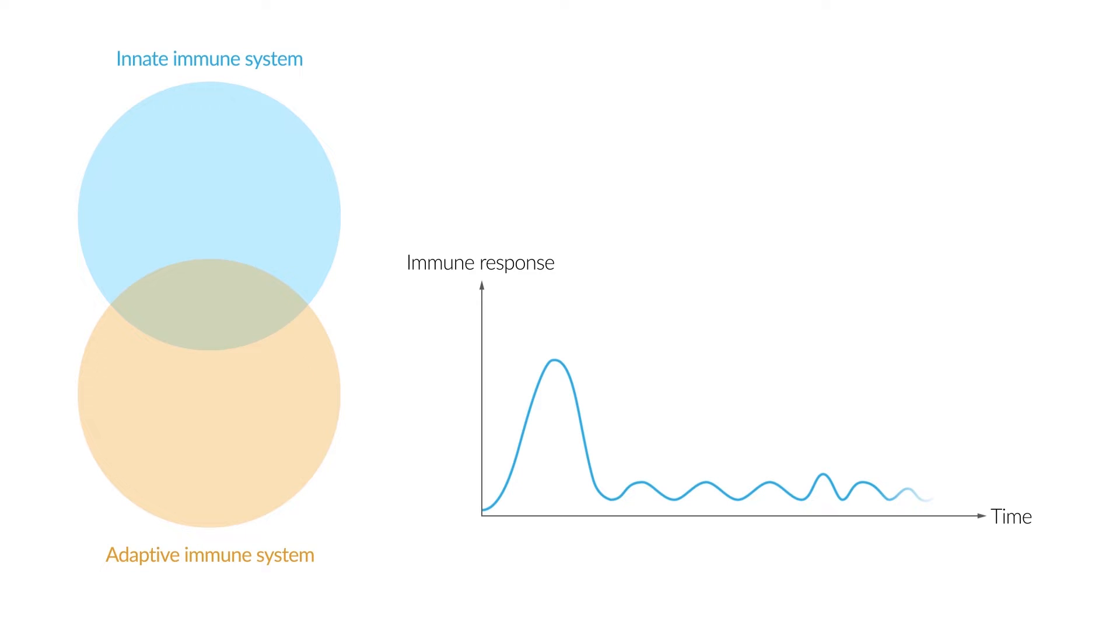As well as the innate immune system, the adaptive immune system is also activated. Its reactions start at a later stage, and the response is initially slower. Through its high degree of specificity, the adaptive immune system can efficiently fight against the invading pathogen, preventing it from spreading.